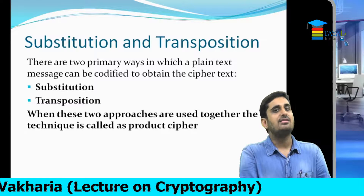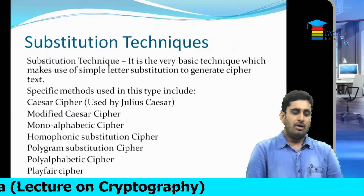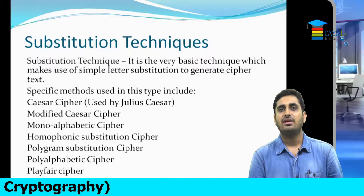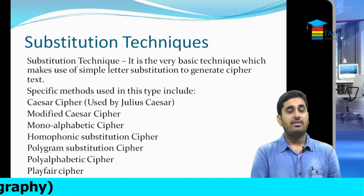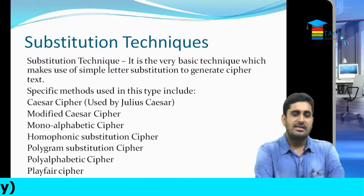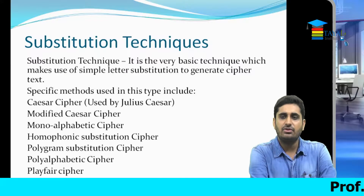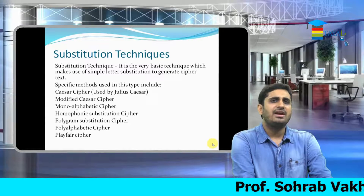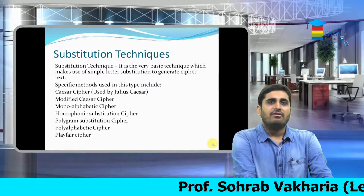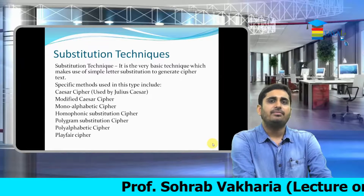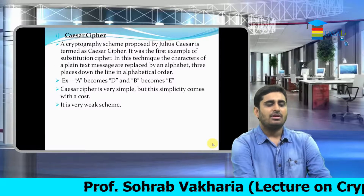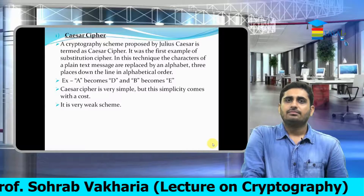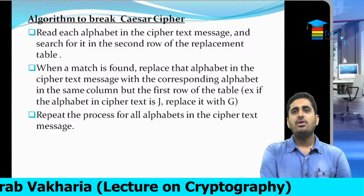The substitution technique is used in several ciphers: the first and most well-known is the Caesar cipher, followed by modified versions — monoalphabetic, homophonic, polygram, polyalphabetic, and many others. We will be learning these ciphers in other tutorials. On the screen there is an example of the Caesar cipher.